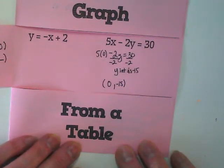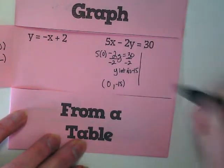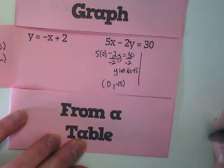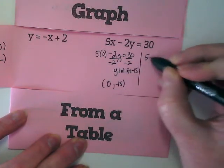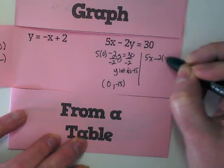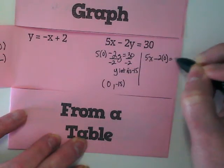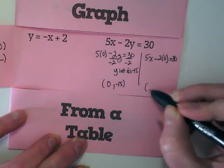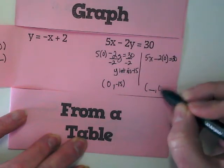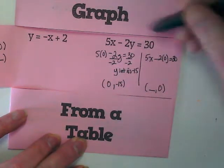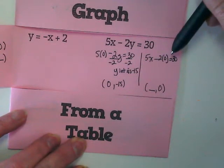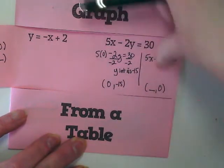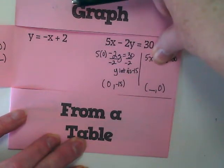We can do the same thing with the same equation to find the x-intercept, but this time, we're going to keep the x in the equation, and we're going to substitute 0 in for the y. And we're going to find out what this number is by putting a 0 here. If I have negative 2 times 0, what do I get there? 0. That leaves me with 5x equals 30. What's 30 divided by 5?